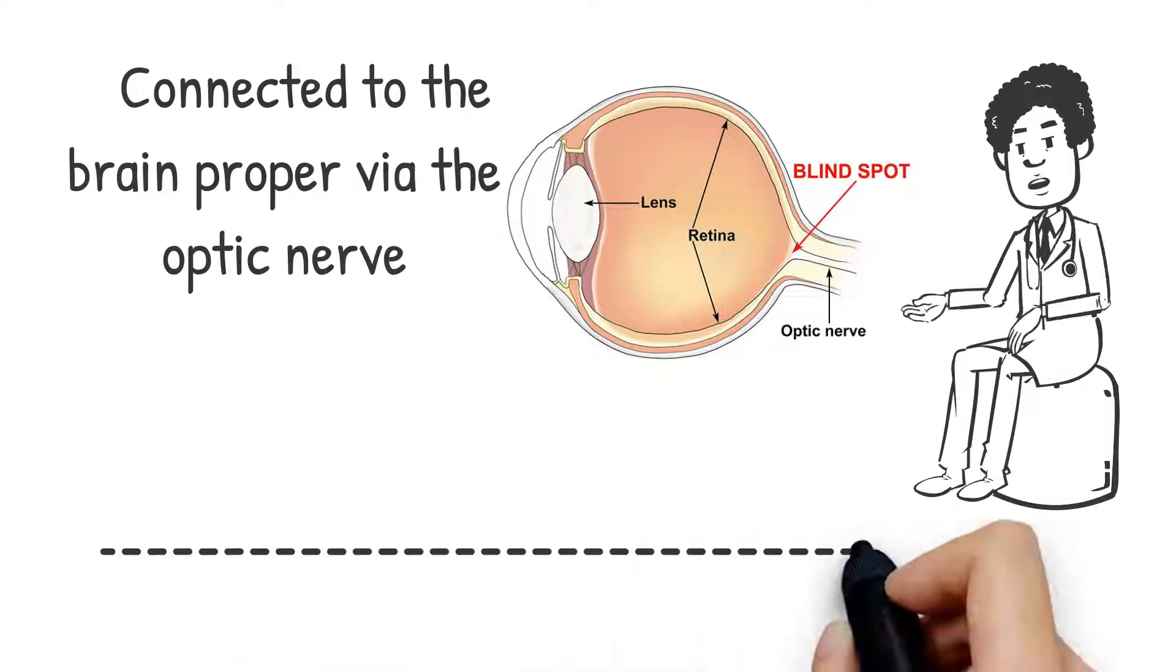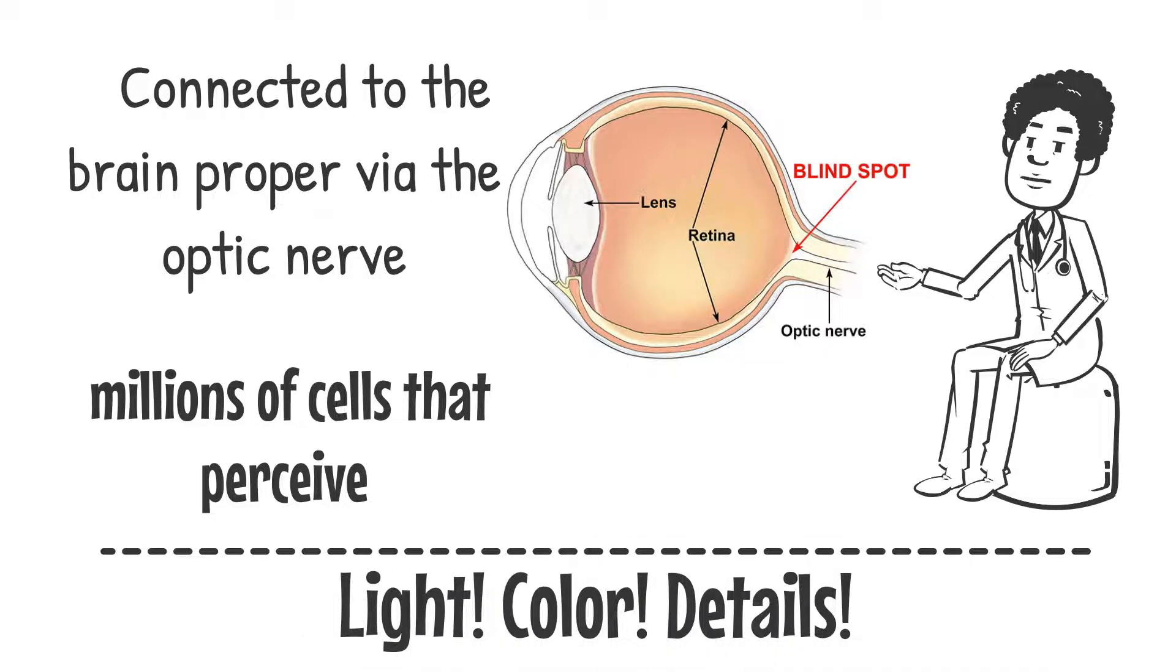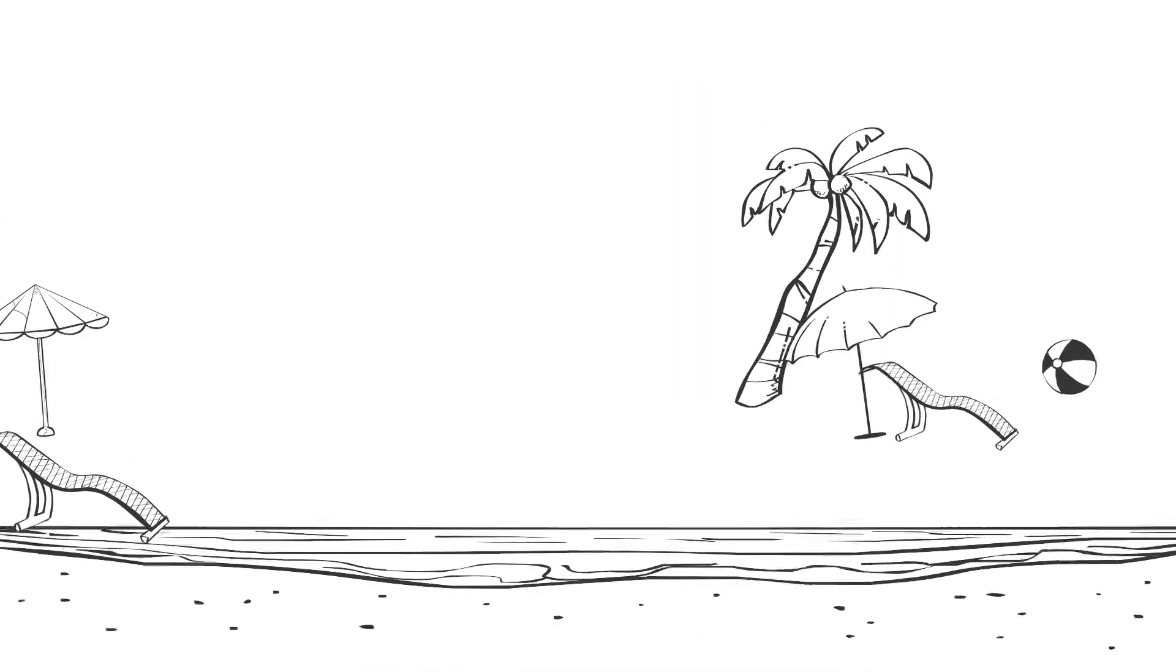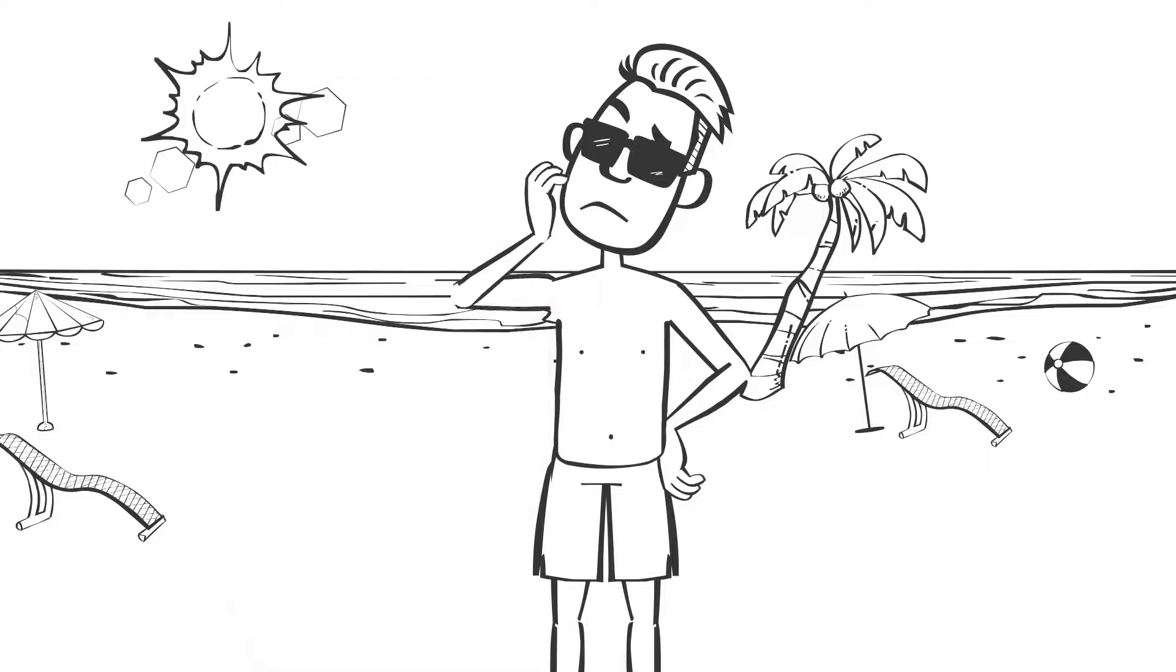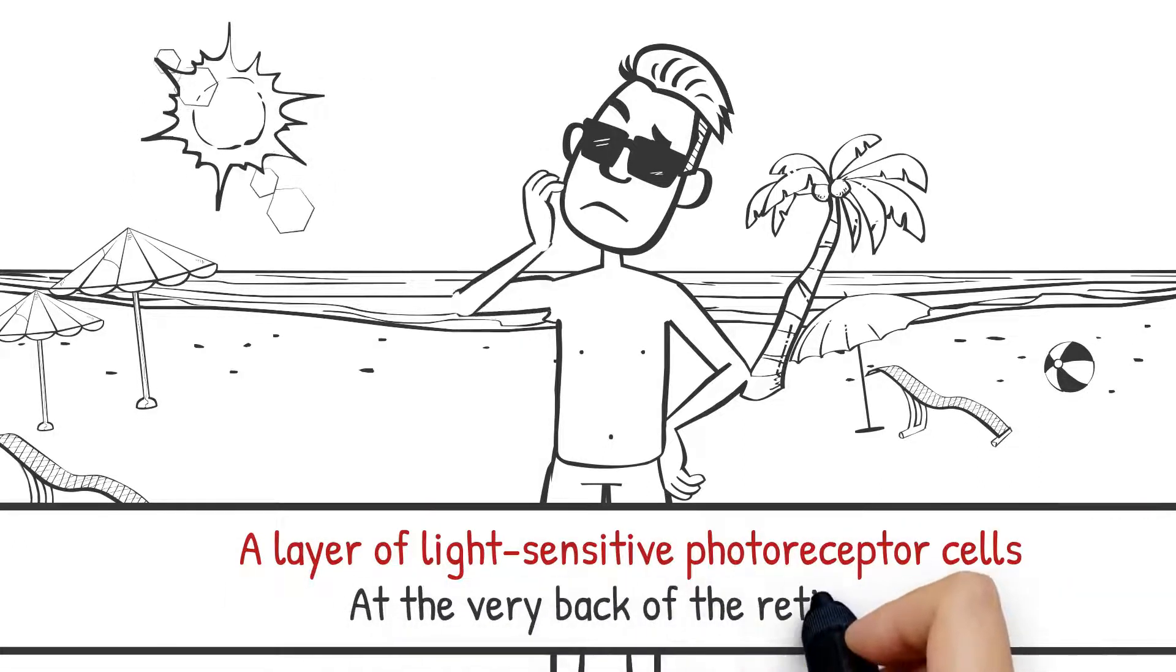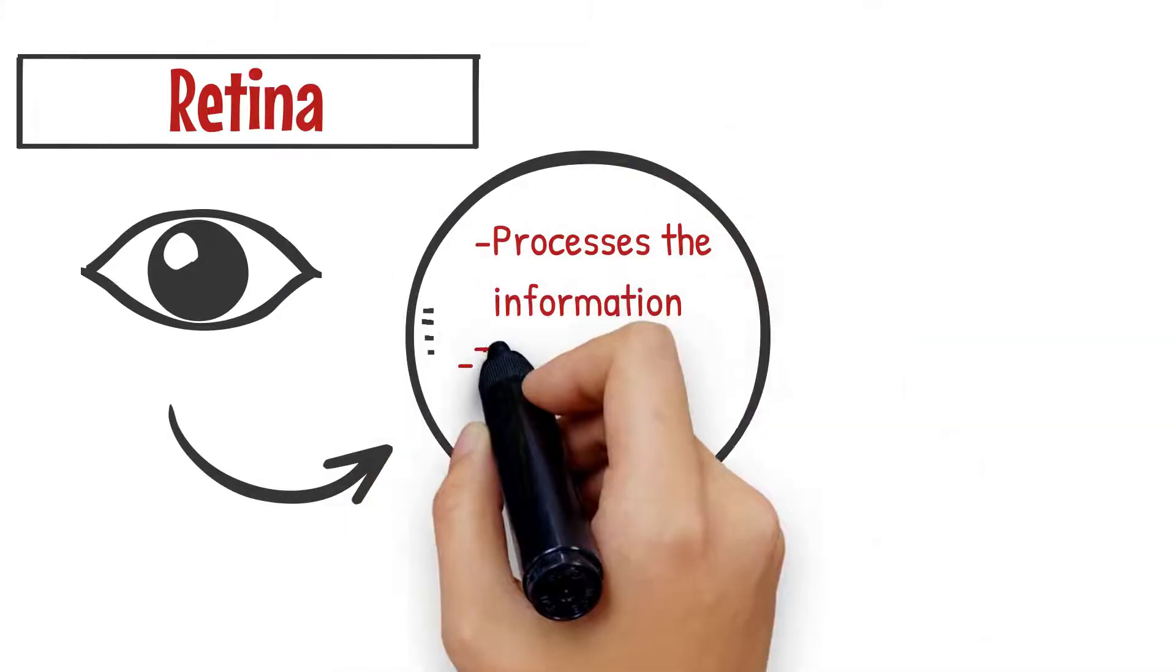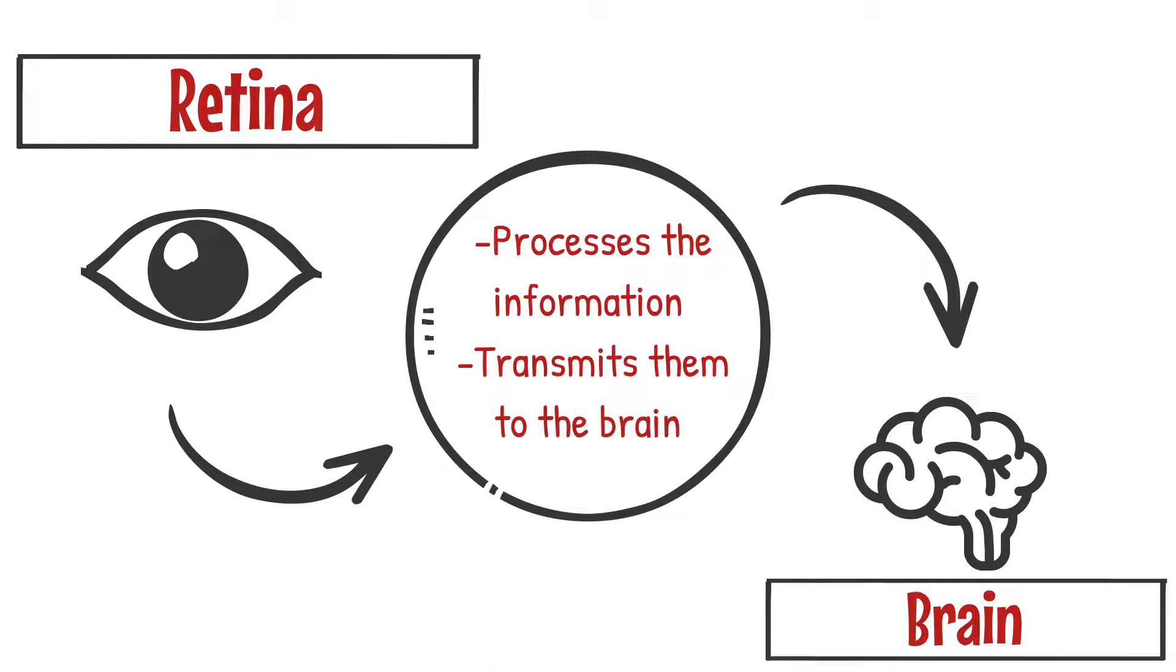Our retinas contain millions of cells that perceive light, color, and fine details into things we see around us. It processes light through a layer of light-sensitive photoreceptor cells located at the very back of the retina. The retina then processes the information gathered by the cells and transmits them to the brain through the optic nerve.